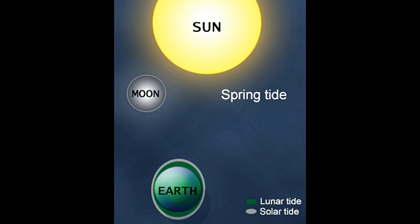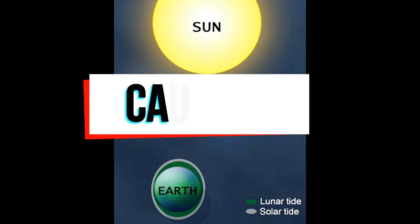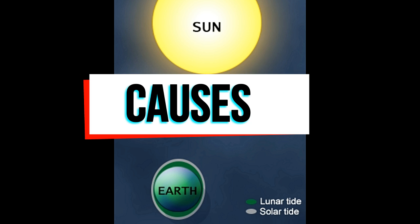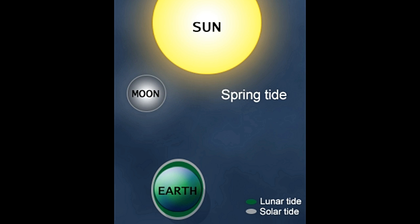Spring tides are caused by the moon coming in line with the sun and earth. Due to this arrangement, the gravity of both the sun and the moon act on the water in the same region. Hence, waves during this period are higher than average.